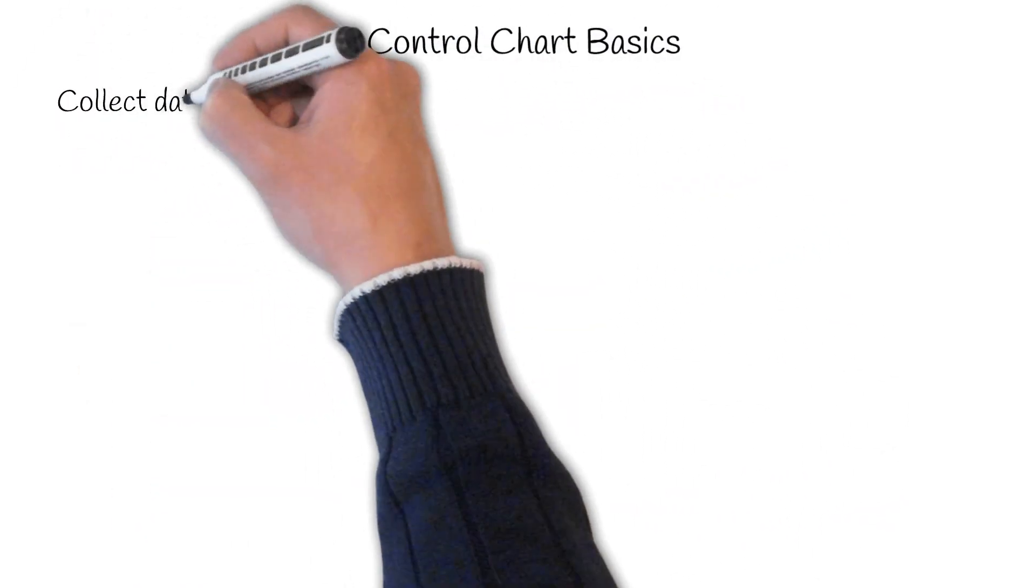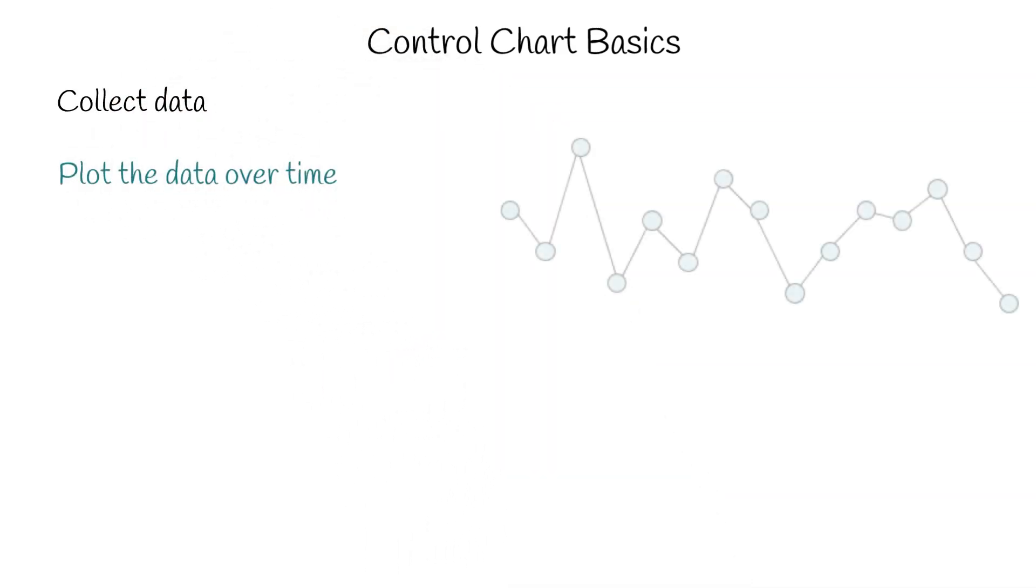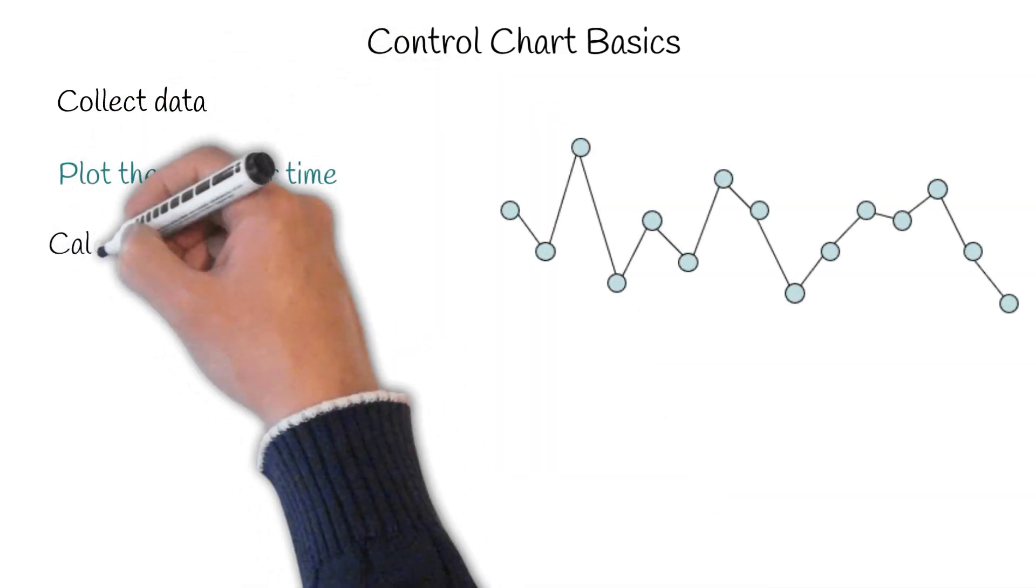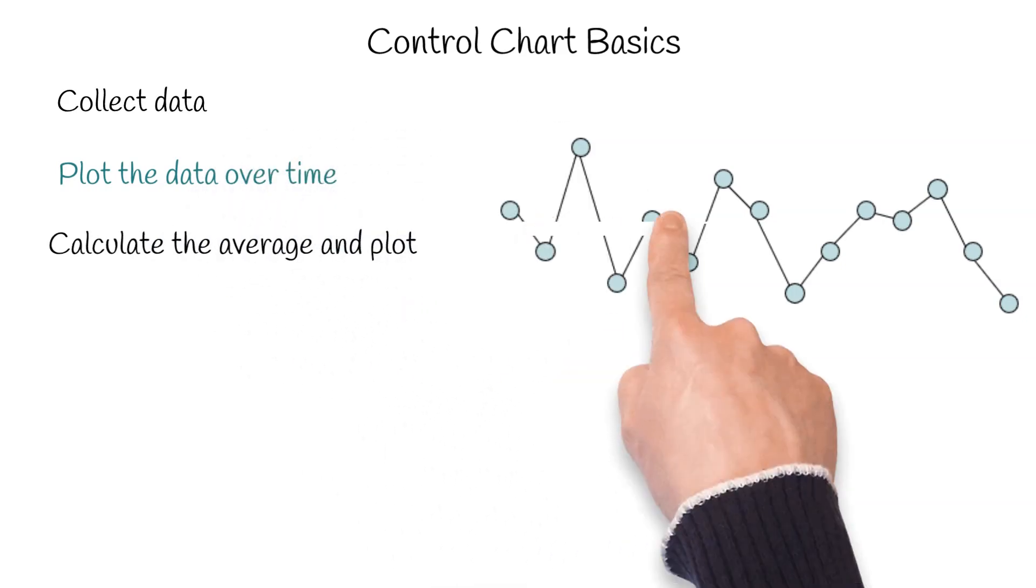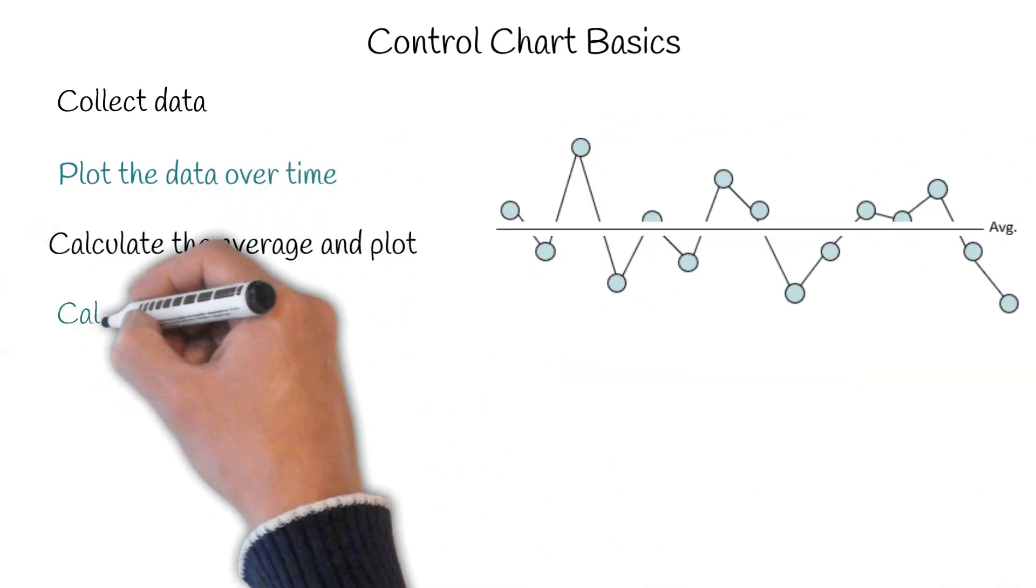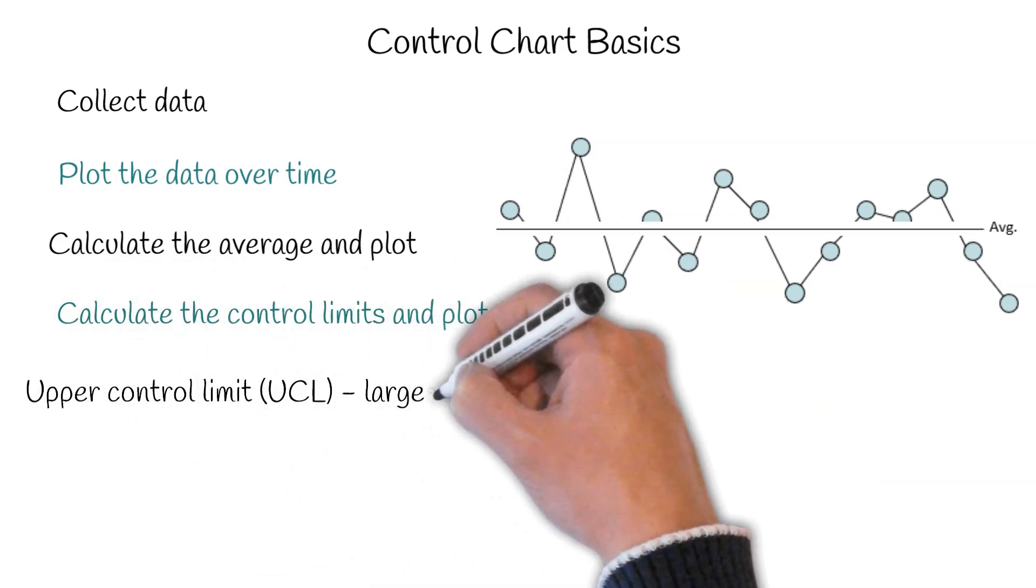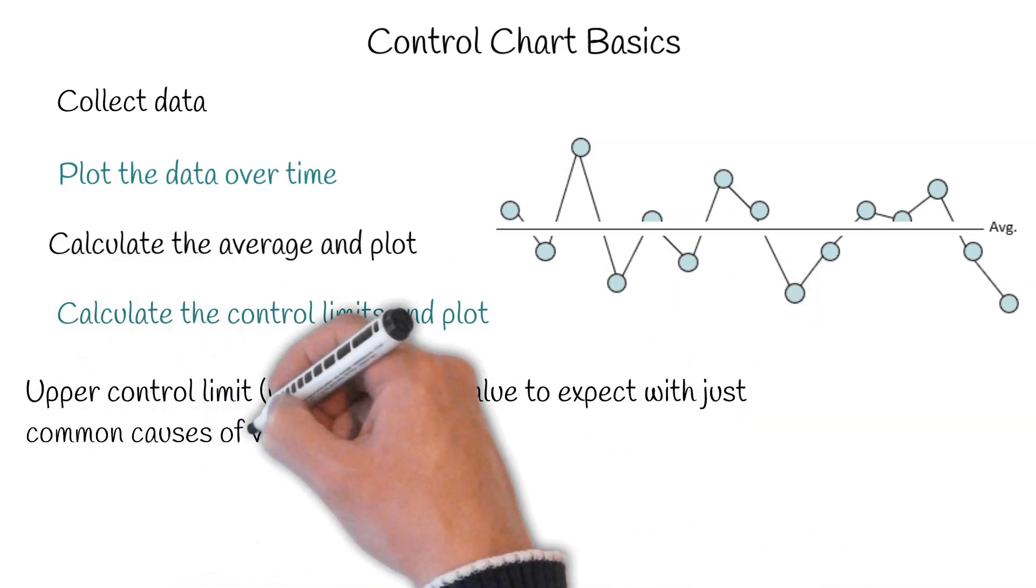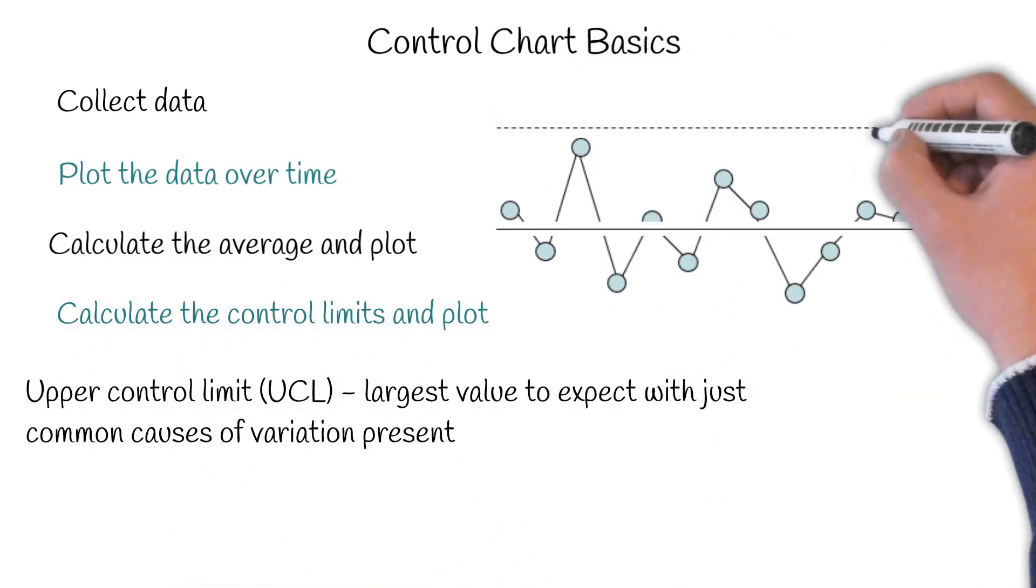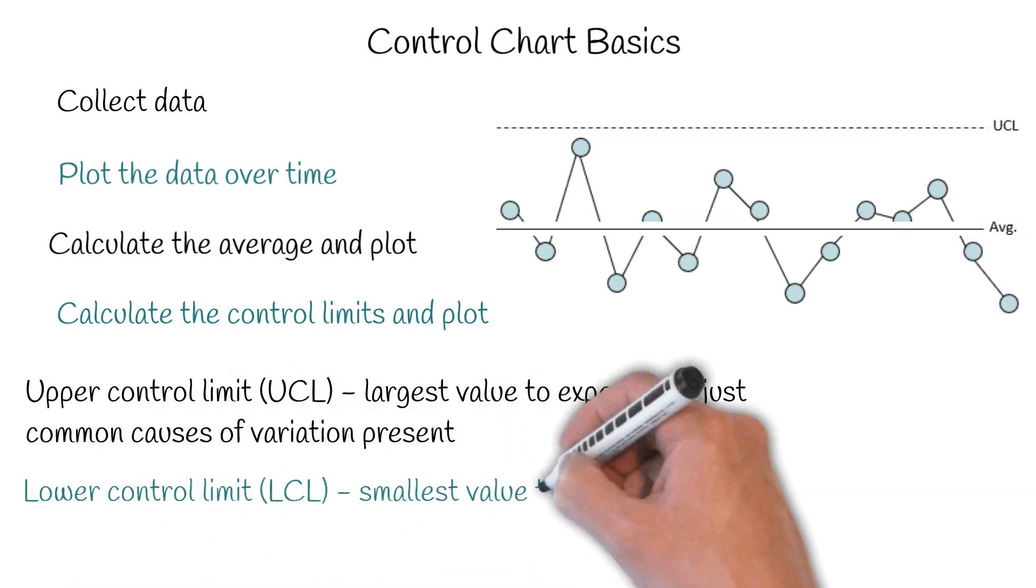So what are the control chart basics? The first thing you do is collect data and plot the data over time. Then you calculate the average and plot the average on the control chart. Then you're going to calculate the control limits and plot those. The upper control limit, UCL, is the largest value you would expect if you just have common causes of variation present.